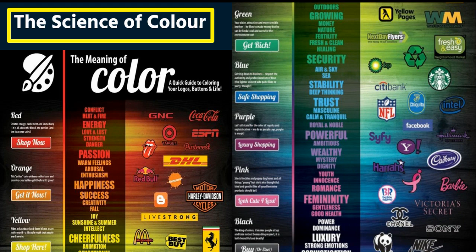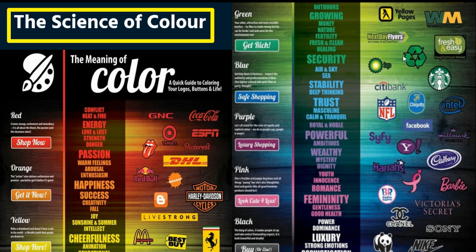Brands that have used purple include Hallmark and the Sci-Fi channel. Green is interesting too because it's often associated with being eco-friendly and kind to the environment — nature, fertility, growth, the outdoors. For example, Subway used yellow and green because it symbolizes healthy eating. You've got Starbucks and recycling brands as well. Any company that wants to embrace the idea of being eco-friendly might bring in the color green. Don't underestimate the power that color has when putting together a brand and logo.